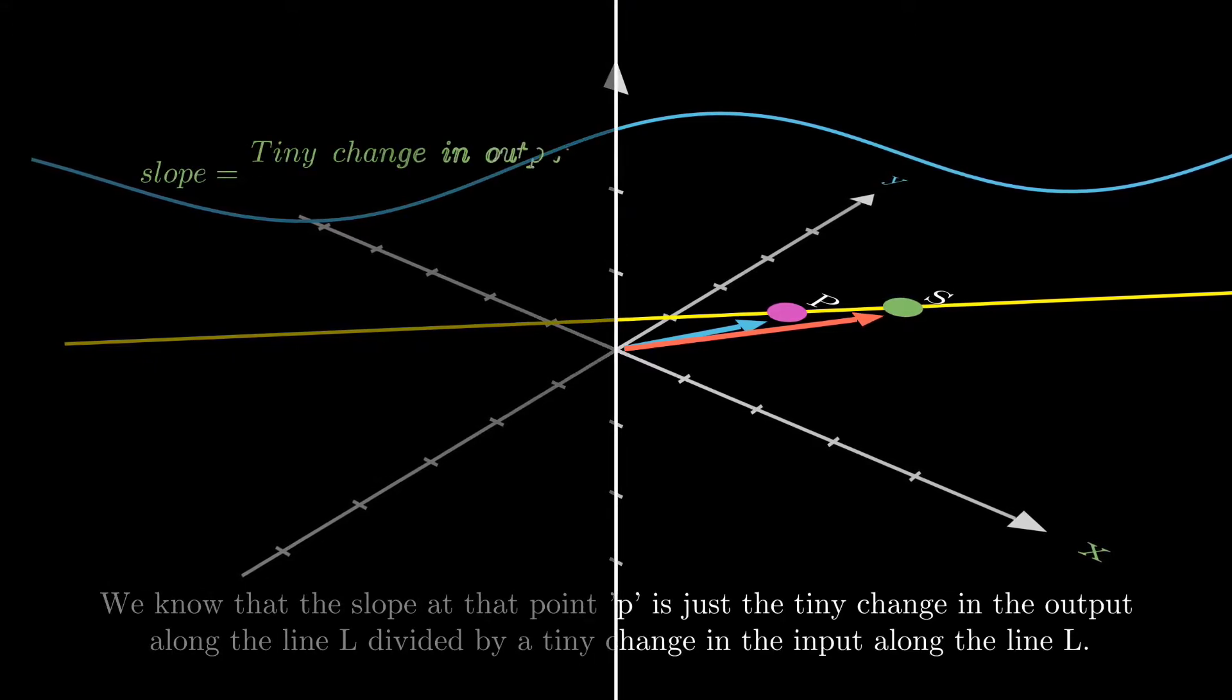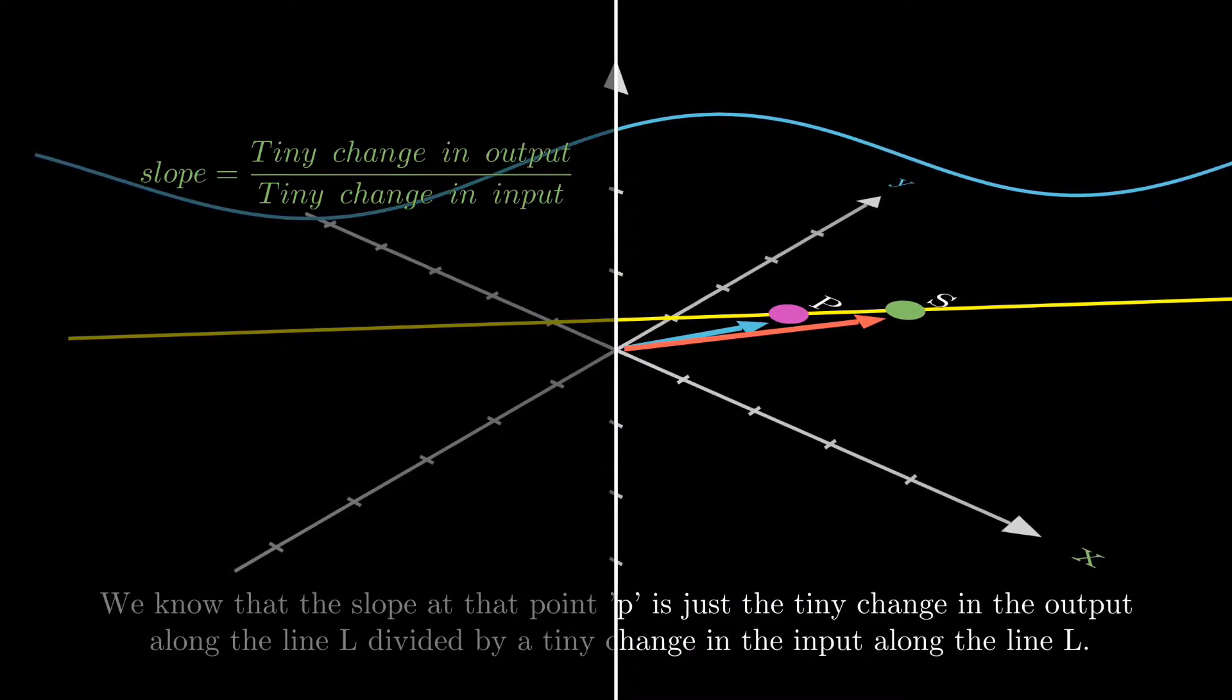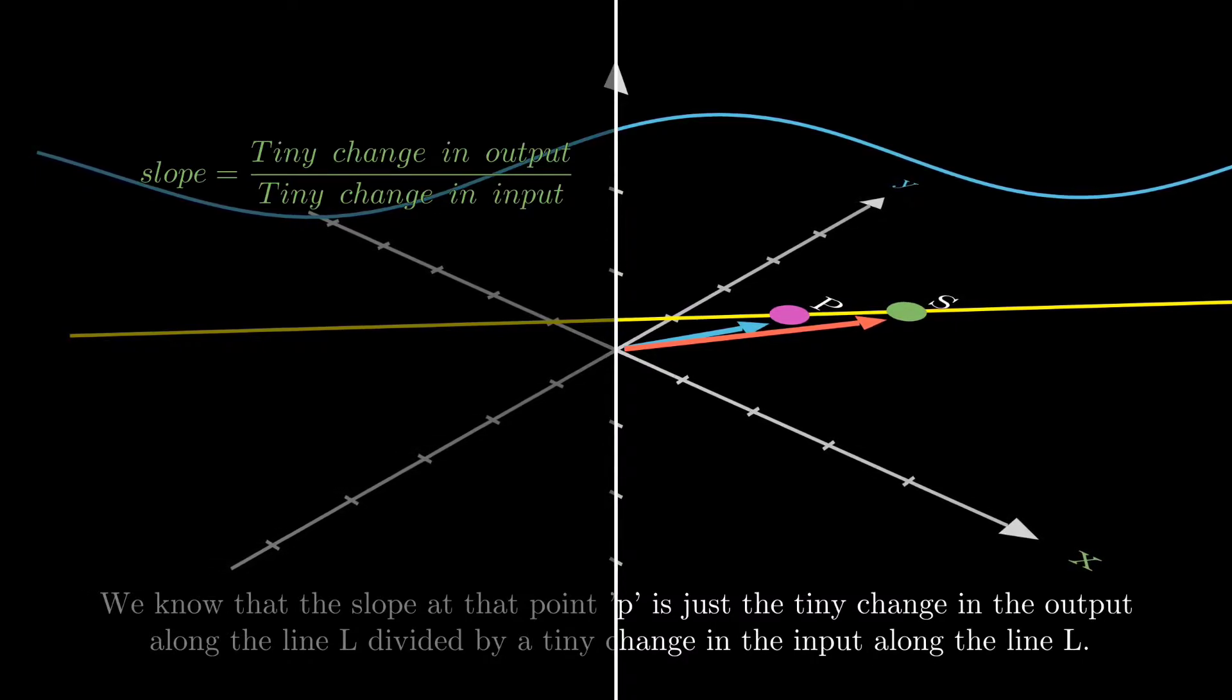We know that the slope at that point P is just a tiny change in the output of our function along the line L divided by a tiny change in the input of our function along the line L.